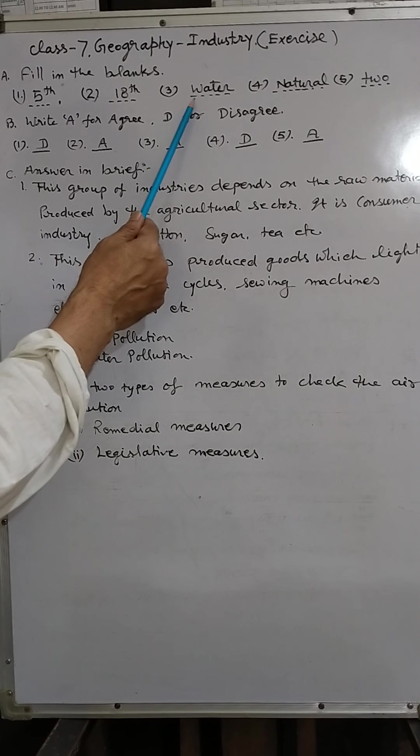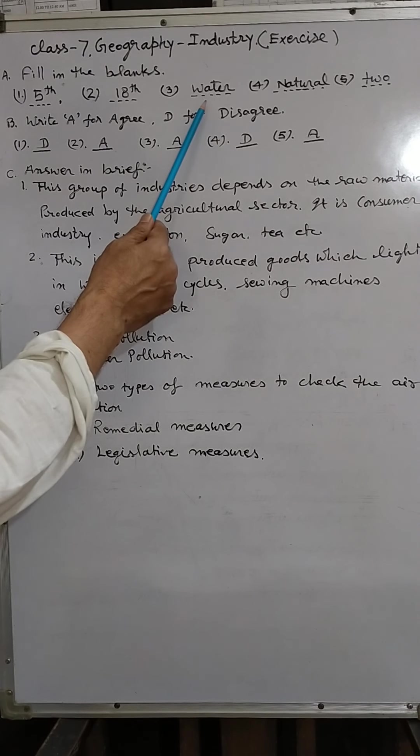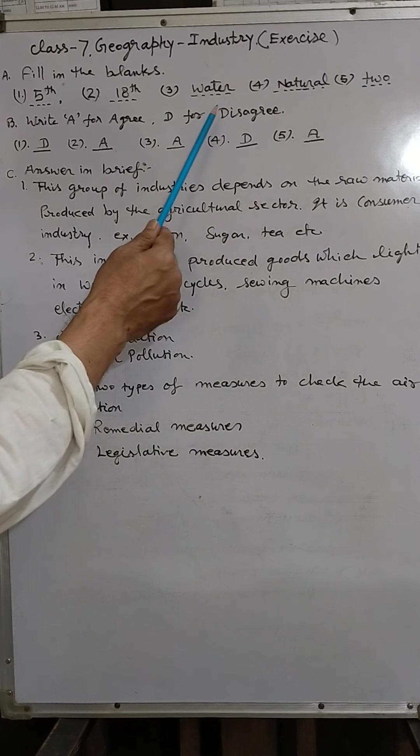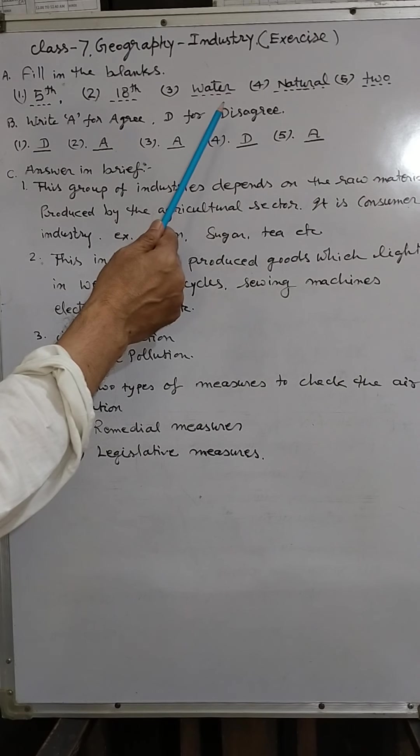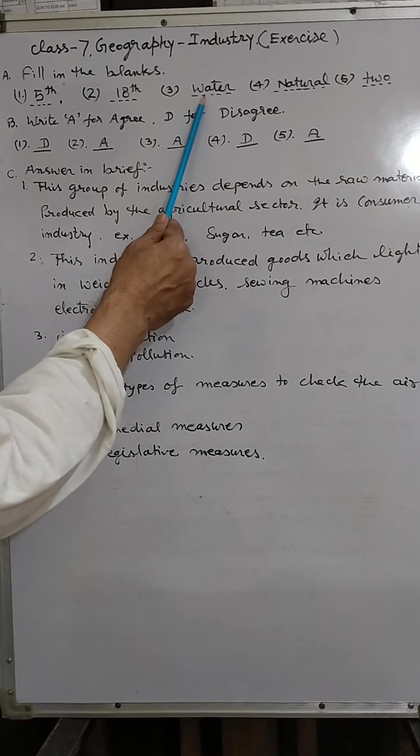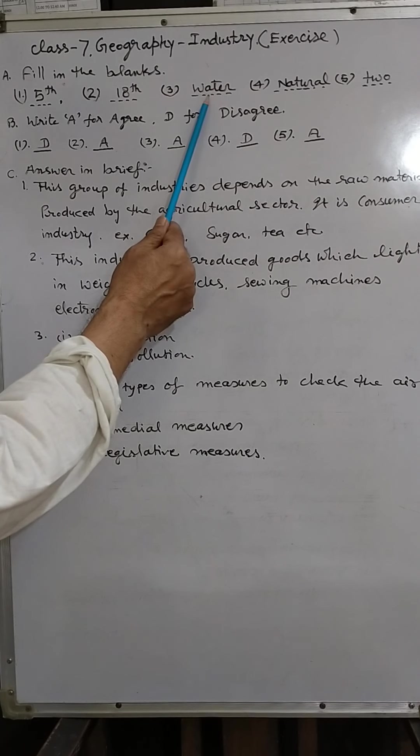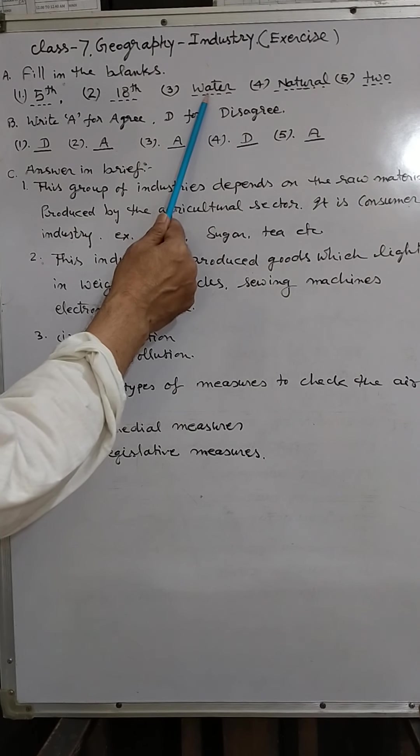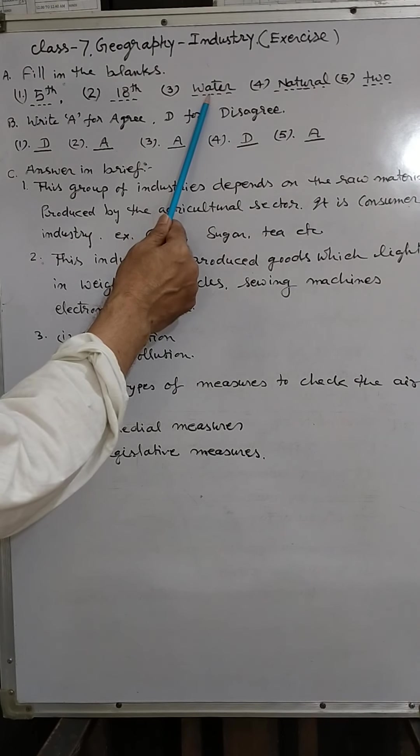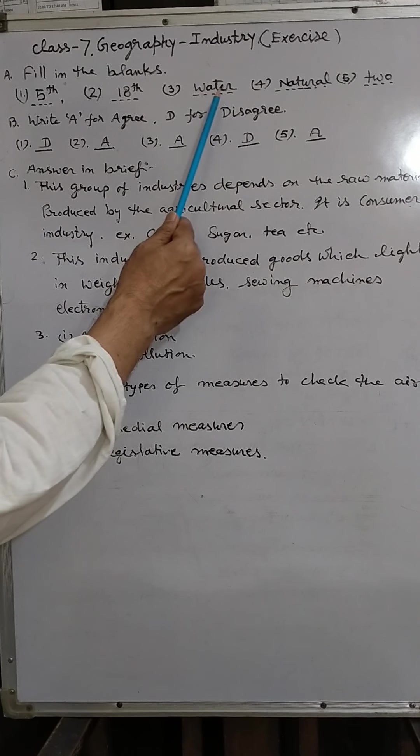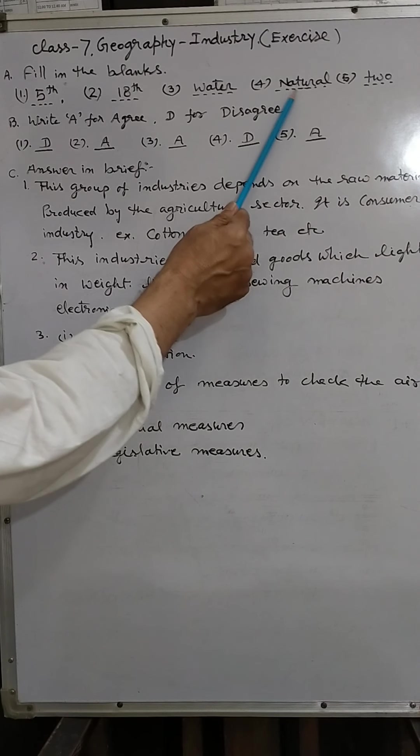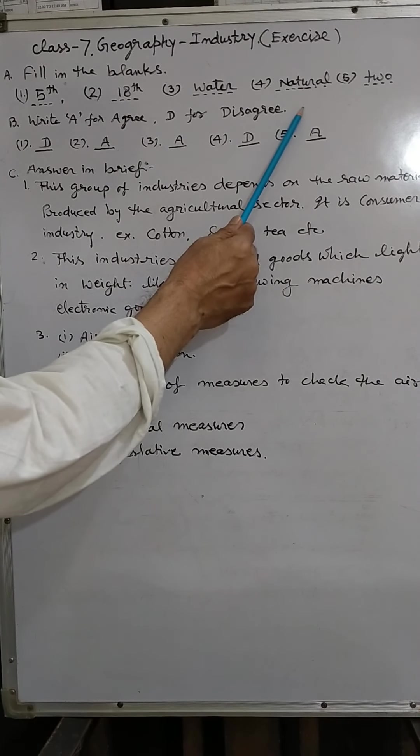Water is a vital source for a number of industries like chemicals, food processing, and textile. Water is an important component for chemical industry, cotton industry, and food processing industry. So you write water. Cotton is a natural fiber obtained from cotton plant.